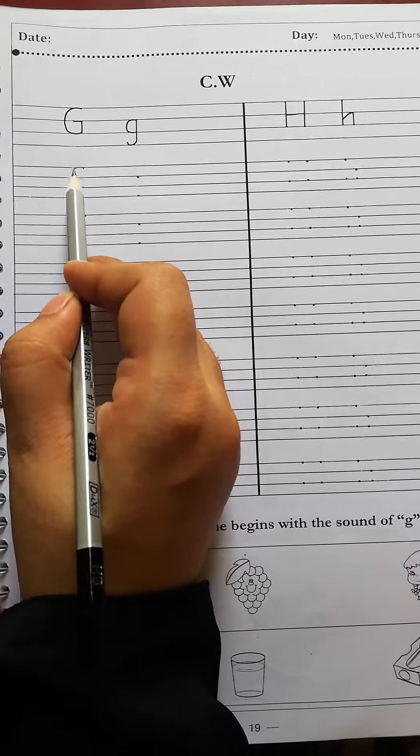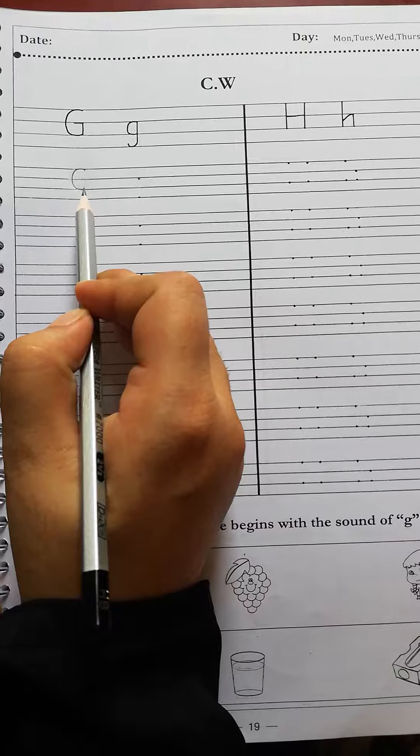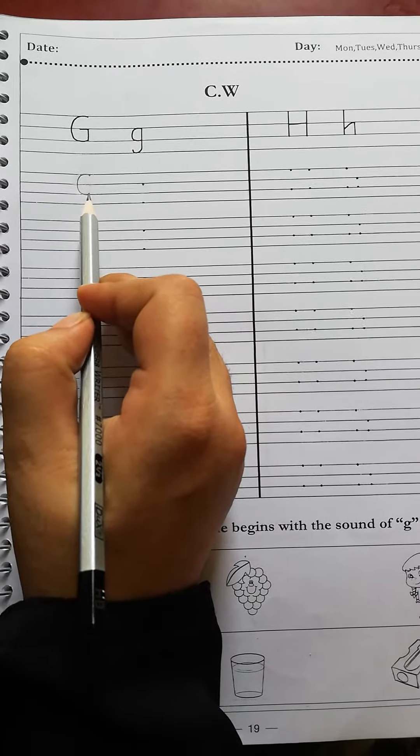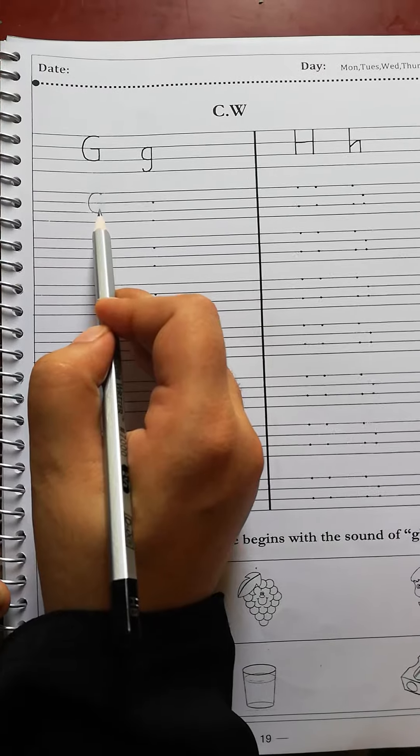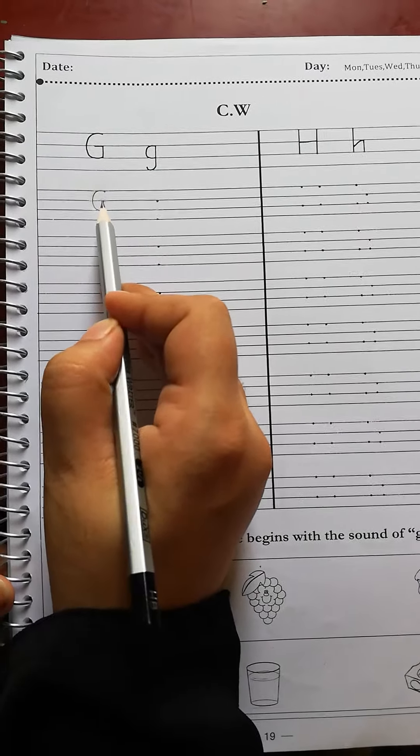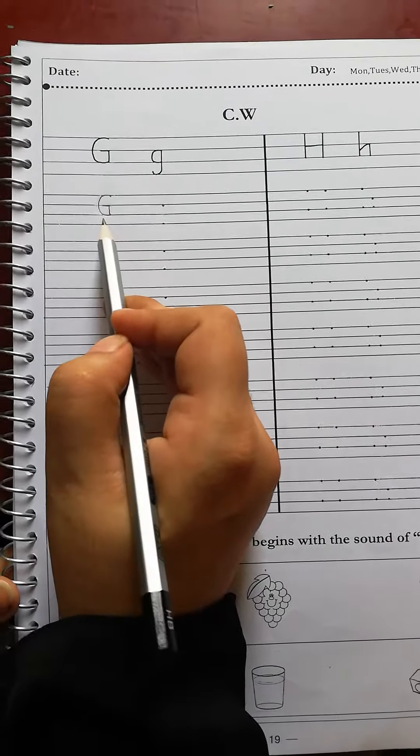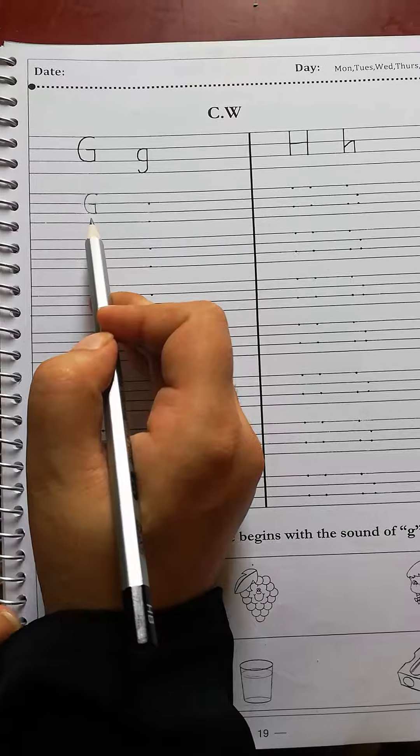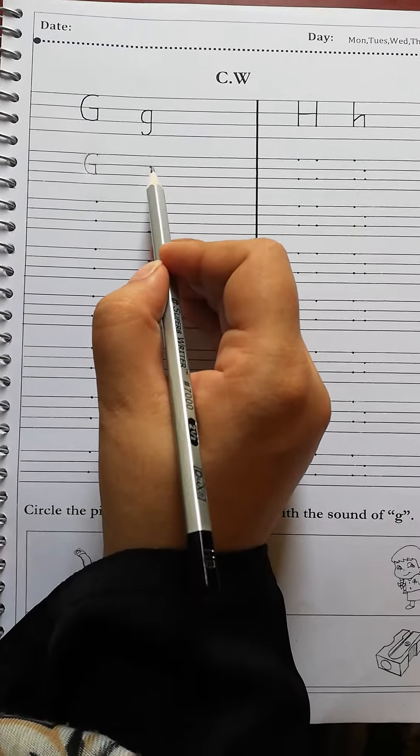And make a round belly to the second dot, just like C. Then we make a straight line to the second line and make a line like this. It's a capital G. Now we write small g. We put the pencil on this one dot.